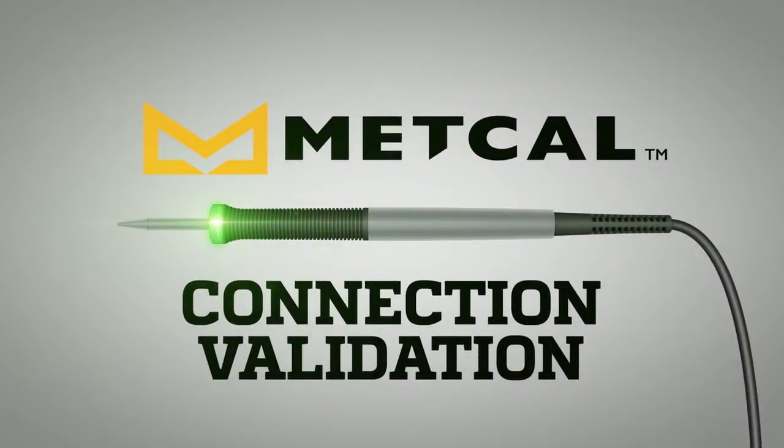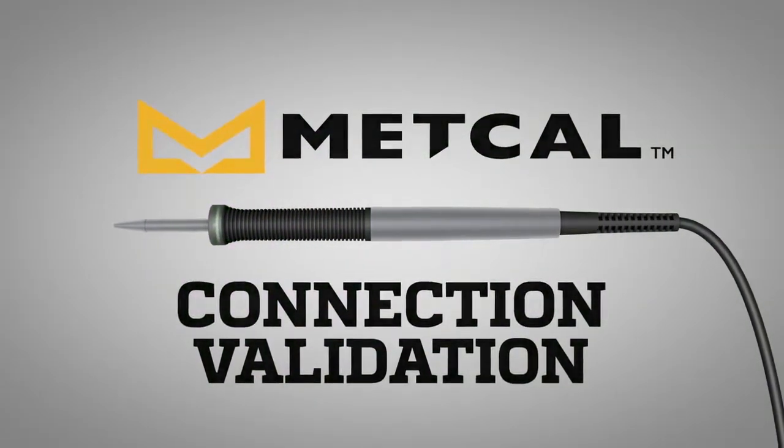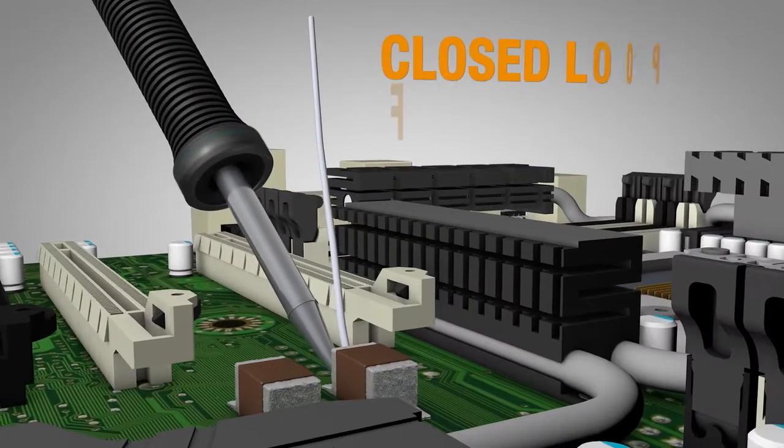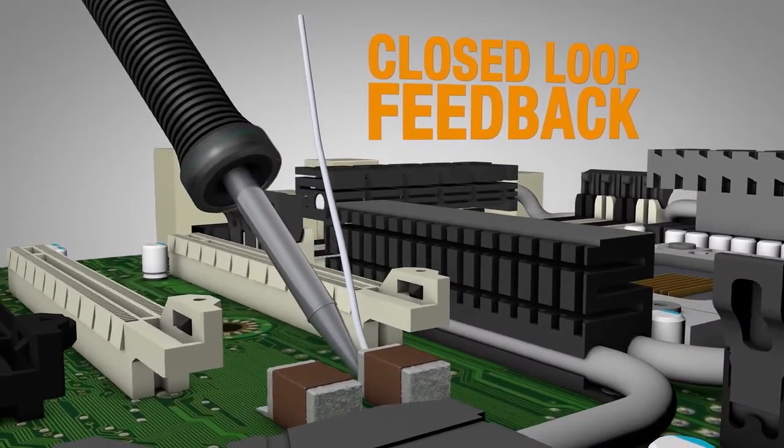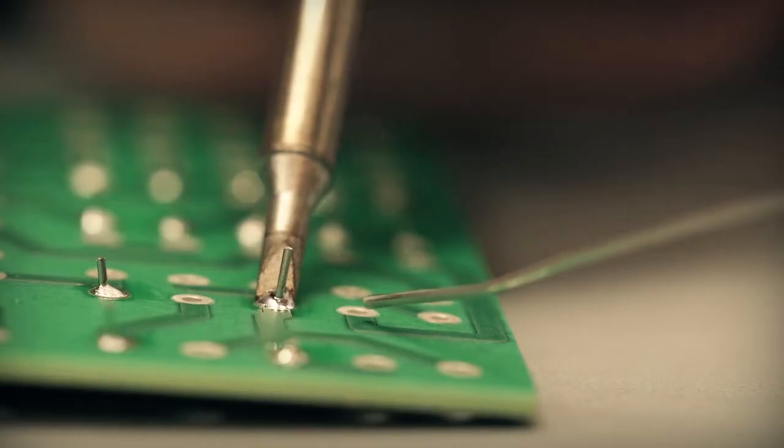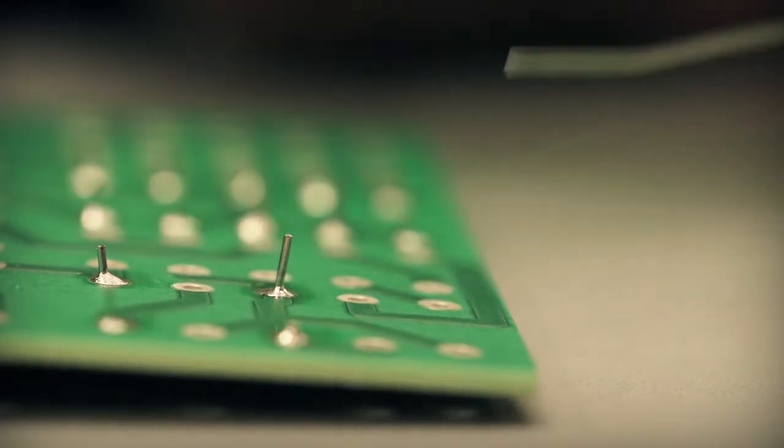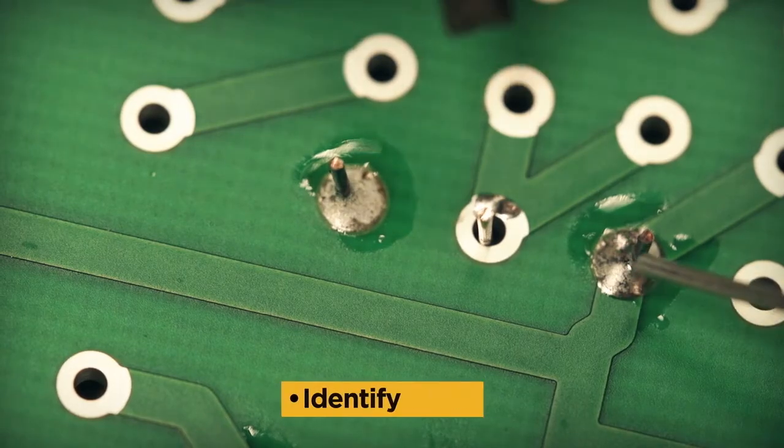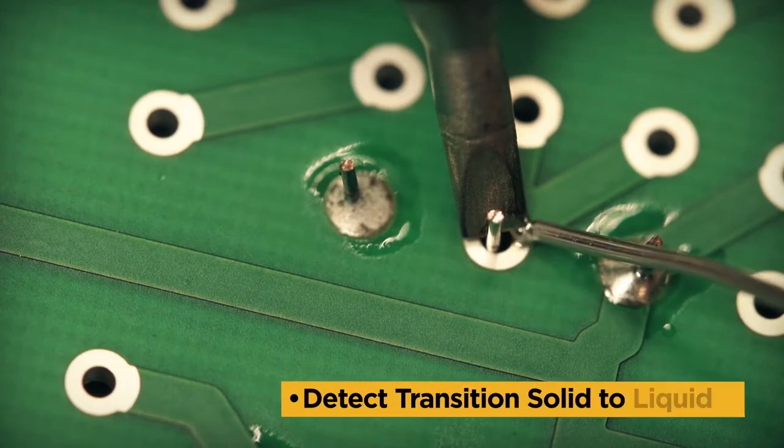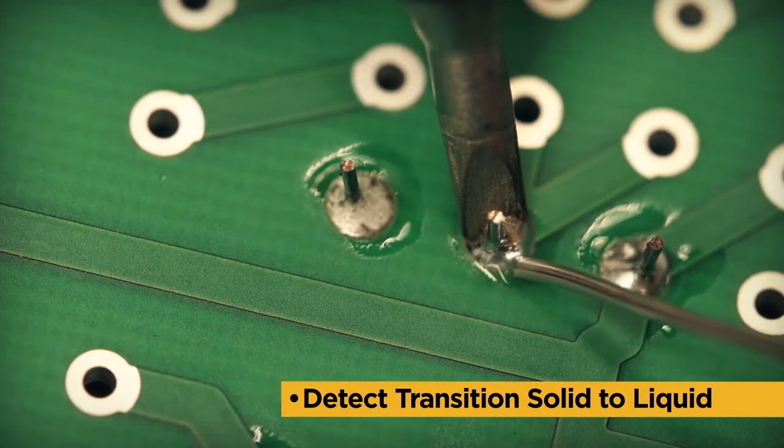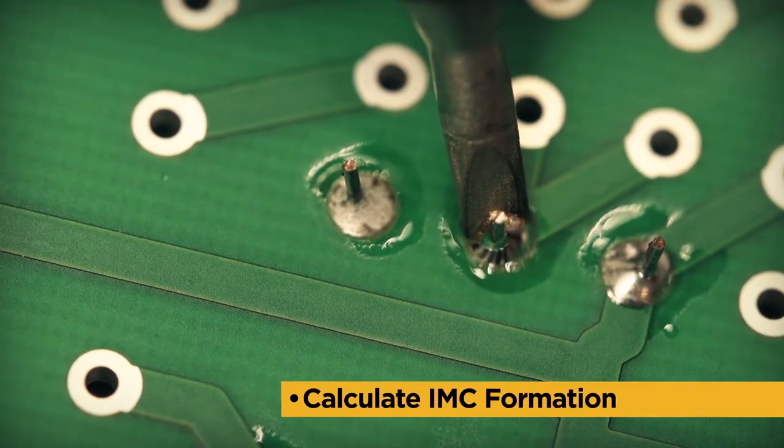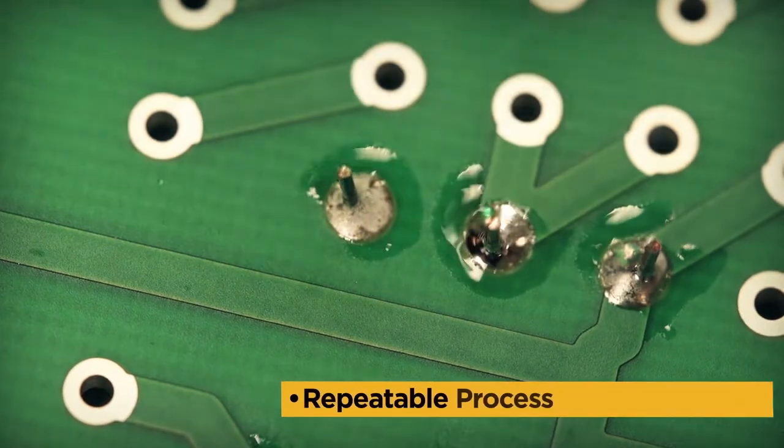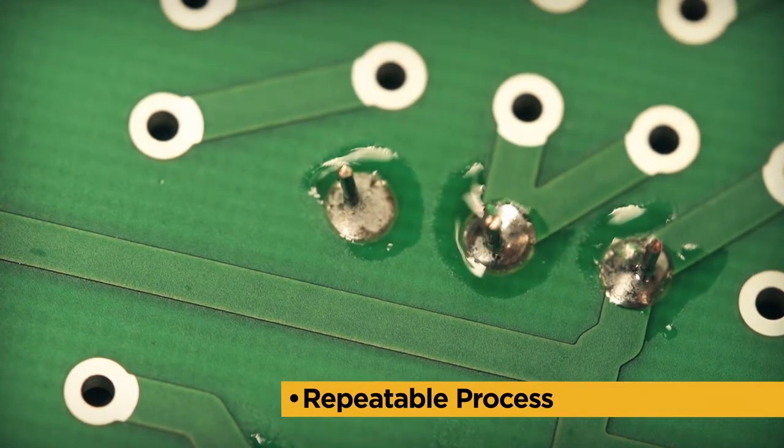Starting with SmartHeat, connection validation changes the approach to soldering by creating a closed loop feedback system to complement the visual standard. Validation of a solder joint requires the ability to identify the correct solder geometry, detect the transition of solder from solid to liquid, and calculate the intermetallic compound formation without adversely affecting throughput or repeatability.